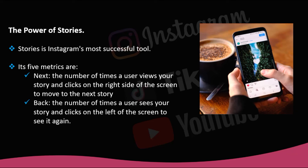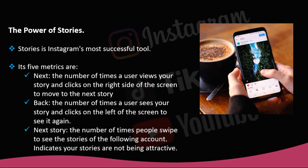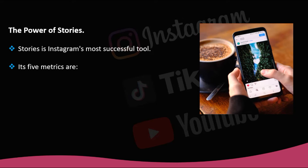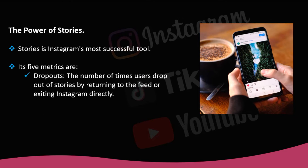Back — the number of times a user sees your story and clicks on the left of the screen to see it again. Next story — the number of times people swipe to see the stories of the following account; this indicates that your stories are not being attractive. Dropouts — the number of times users drop out of stories by returning to the feed or exiting Instagram directly.